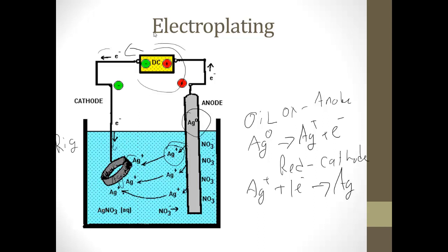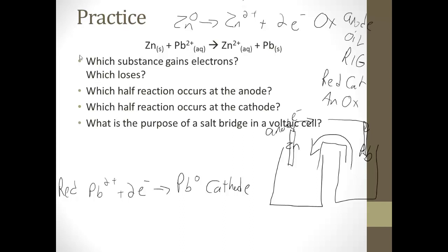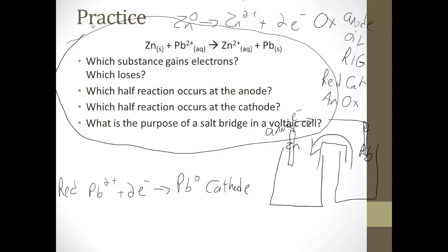So in an electrolytic cell, you have to use electricity to force the reaction to happen, and a common use is electroplating. These concepts are very difficult — we will go over them in class, but it's crucial you come in with at least a bit of understanding, so do go back and watch this again. We will do practice in class, and if you can't answer the practice questions on your own before coming to class, it's going to make things very difficult. I'll see you guys in school.